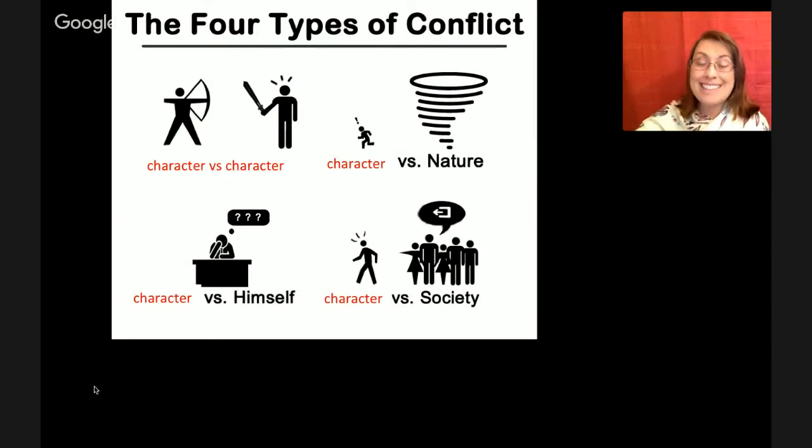All right, this illustration is to show you the four types of conflict. And so first we have character versus character. There's character versus nature, character versus himself, and character versus society. So you can kind of visualize how each of those, what each of those means.